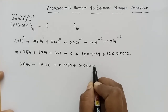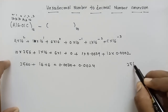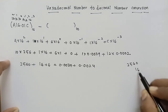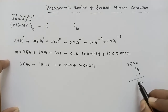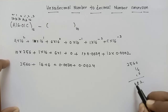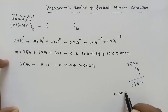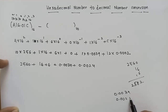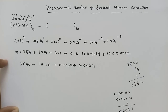And we get 0.0024. Simplifying: 2560, plus 16, plus 6, equals 2582. Plus 0.0039, plus 0.0024. Adding the fractional parts: 0.0039 plus 0.0024 equals 0.0063.